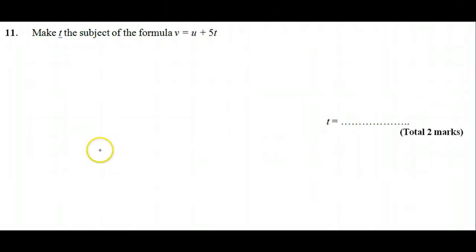Hi there, this is a GCSE question about rearranging formulae. What we've been asked to do is make T the subject of the formula, so at the end we'll have T equals some expression in terms of V, U, and 5.